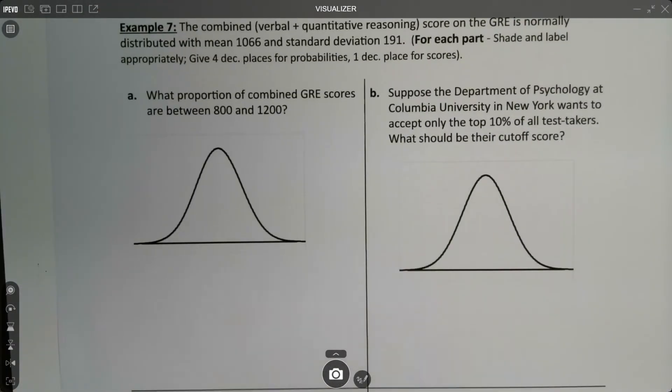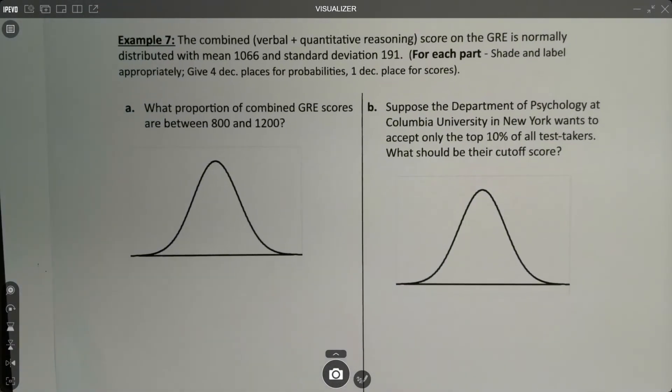Let's see what we've got here. We have the combined verbal and quantitative reasoning score on the GRE. The GRE is an exam you take at the end of your bachelor's degree if you want to go on to graduate school. The combined scores are normally distributed with a mean of 1066 and a standard deviation of 191. For each part we're going to shade and label appropriately, give four decimal places, all that good stuff.